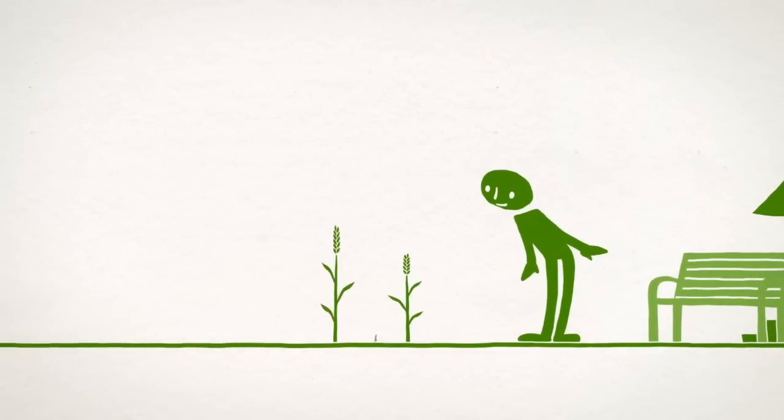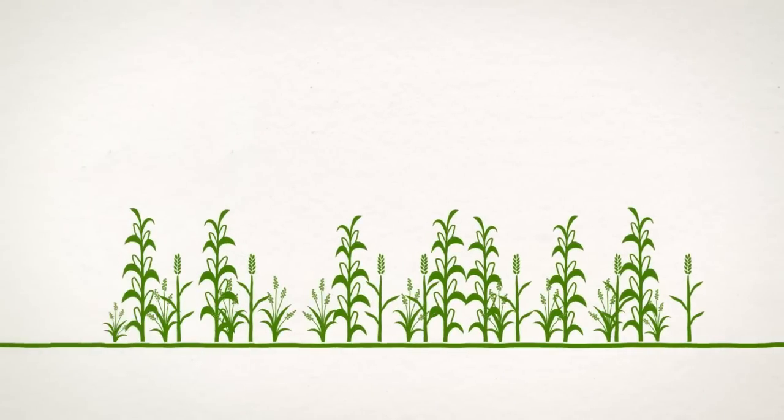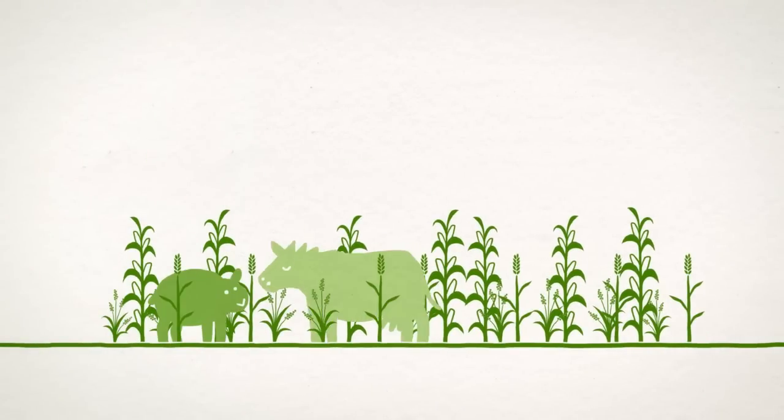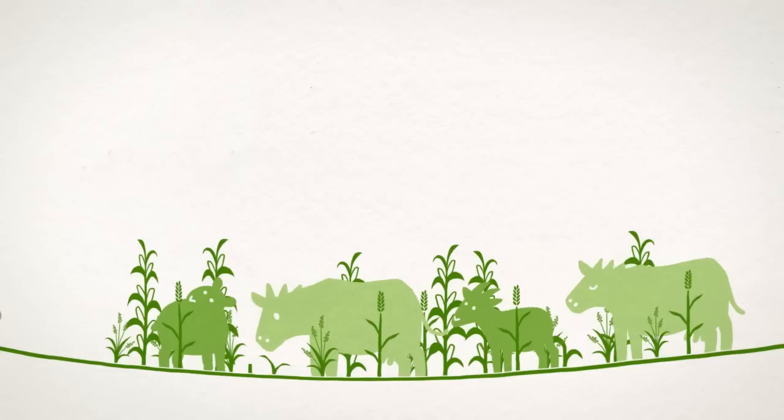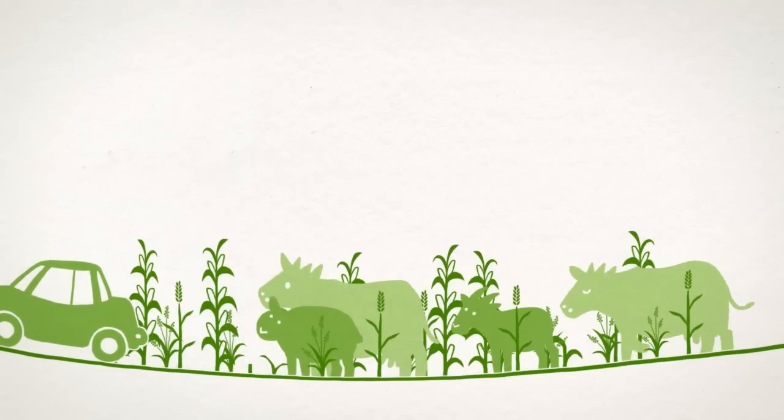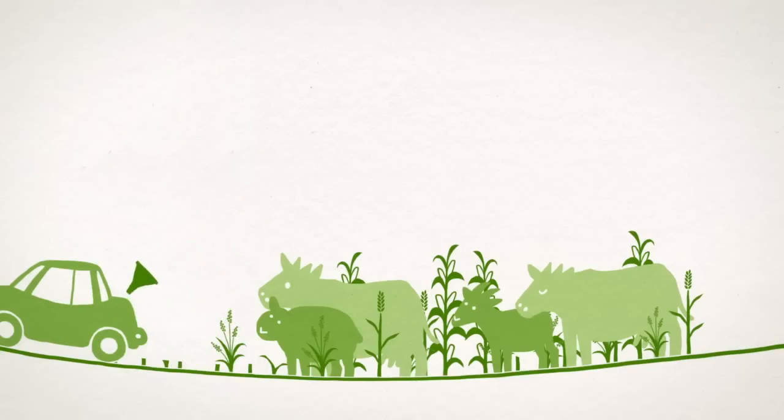Fertile soil puts food on our plate. But the number of plates is growing, and more and more meat ends up on these plates. And part of what we previously put on our plates we now put into our petrol tanks. This again requires more fertile soil.